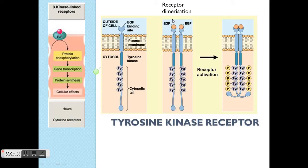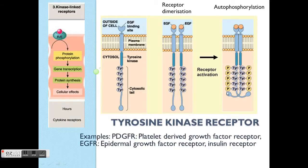It can be a homodimer or heterodimer, but it must go through dimerization. Then through activation, through phosphorylation and autophosphorylation, plus hyperphosphorylation — because you can see there are lots of phosphate groups here.